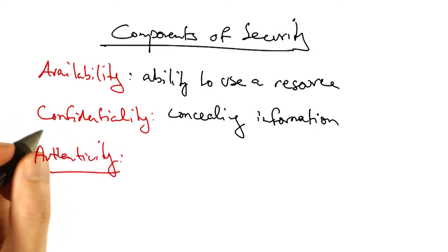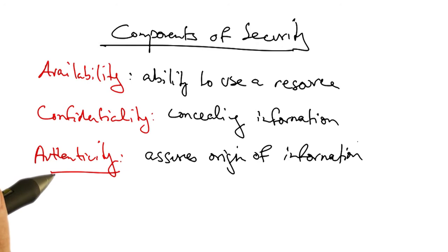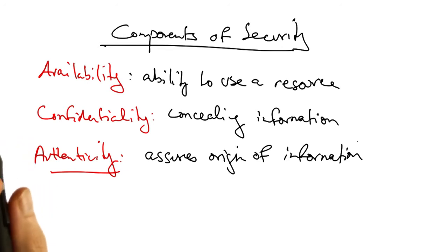Another component of security is authenticity. Authenticity assures the identity of the origin of a piece of information. For example, if you're reading a particular news article, you may really want to know that that article came from the New York Times website as opposed to from some other place on the internet.